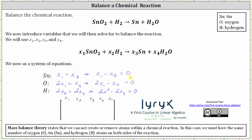In this case the constants will all be zero. Each equation will give us one row in the augmented matrix. Looking at the first equation, the first row in the matrix will be one, zero, negative one, zero, zero — because the coefficient of x sub one is one, the coefficient of x sub three is negative one, and the constant on the right is zero. The second row is going to be two, zero, zero, negative one, zero. The third row is going to be zero, two, zero, negative two, zero.